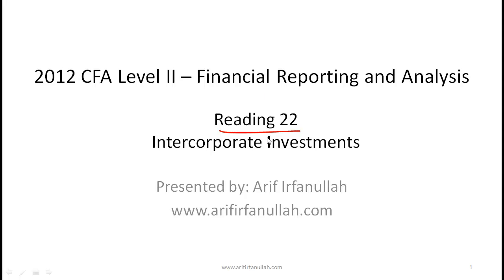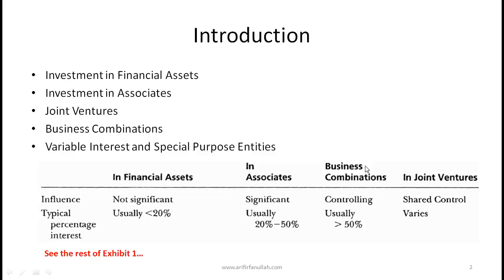We are now doing Reading 22, which is intercorporate investments. This is one of the most important items in FRA at Level 2. Large companies make investments in other companies — for example, DG Cement or Engro will have investments in other companies. The investments that a company makes in other companies are called intercorporate investments.